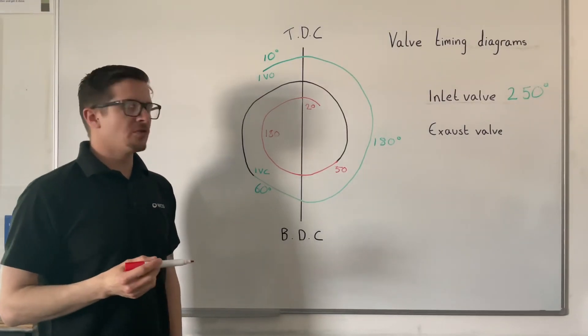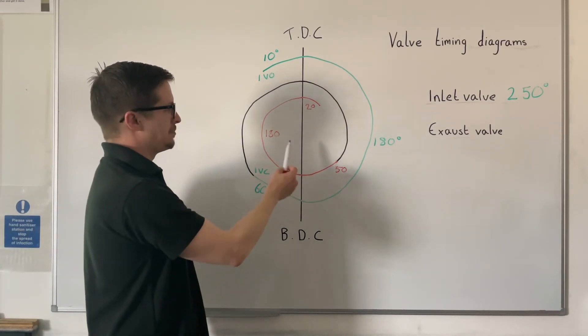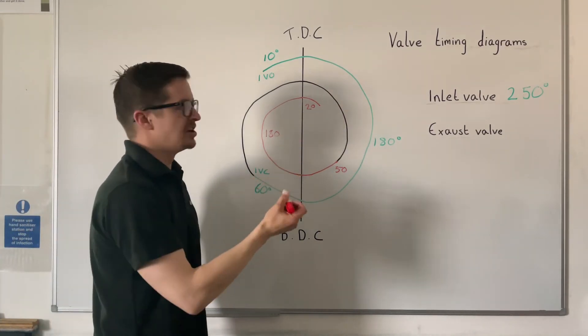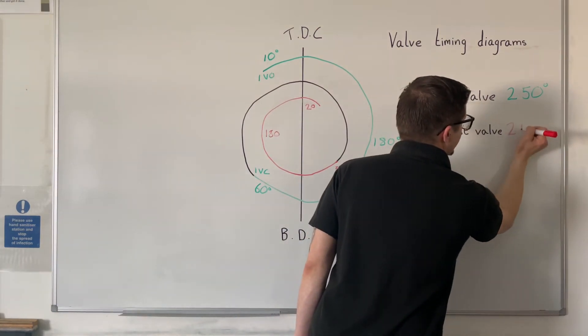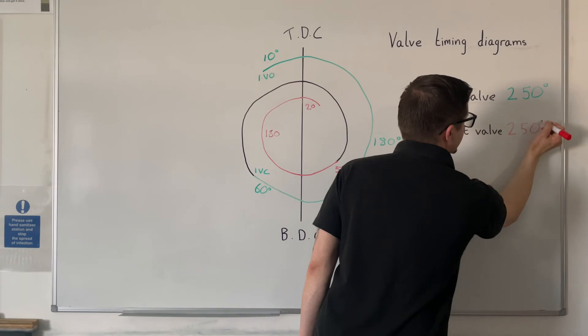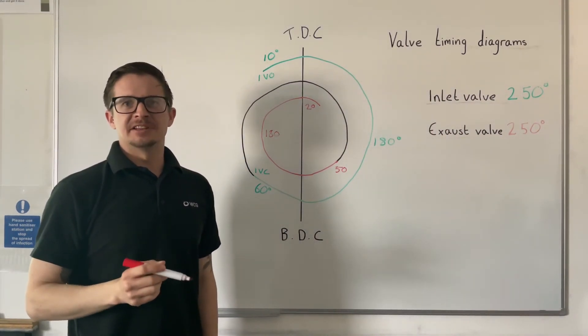To work out how long the exhaust valve is open for, you need to add up these numbers again. So it's 50 plus 180 plus 20 degrees, which gives you 250 degrees. That is only on this example - each engine is different.